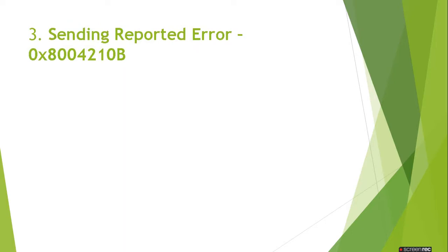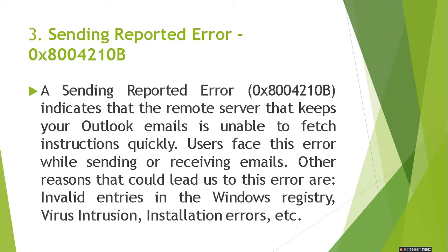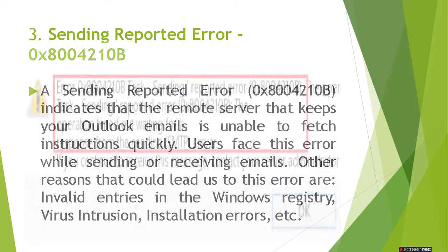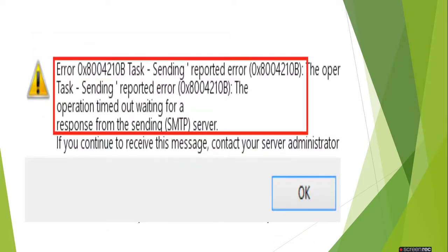Our third reported error is sending reported error 0x8004210b, which indicates that the remote server that keeps your Outlook email is unable to fetch instructions quickly. Users face this error while sending or saving email. Other reasons include invalid entries in the Windows registry, virus intrusion, and installation errors. The solution is to check your registry entries, remove any malicious viruses or software, and correct the entries in the email configuration.